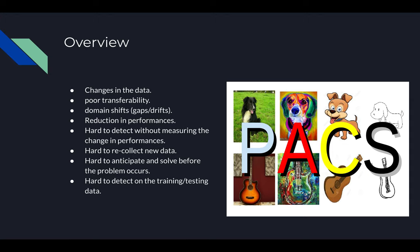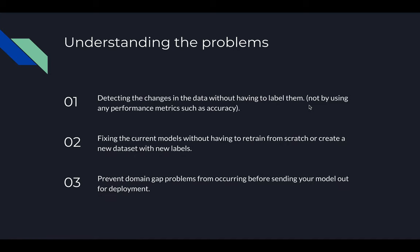The main problem we are concerned with is changes in the data. In the PACS dataset, the concept of a dog in photos is quite similar but different from a dog in an artistic figure, in cartoons, and in sketches. Although there are differences between all four images, the model should easily predict it is a dog in all four pictures without degradation in performance when trained on photos and tested on art.